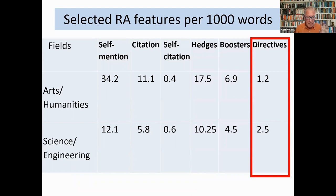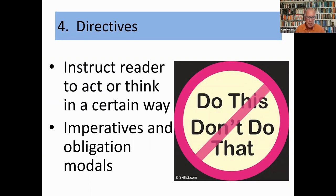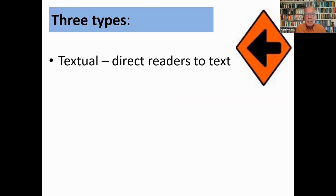The final feature I want to briefly mention are directives, which really refers to the extent to which succinctness and precision are valued or even possible. Directives instruct the reader to perform an action or to see things in a way determined by the writer. They're expressed through imperatives like 'consider', 'note', 'imagine' and obligation modals like 'must', 'have to', 'ought to'.